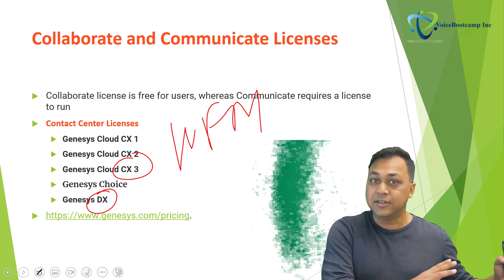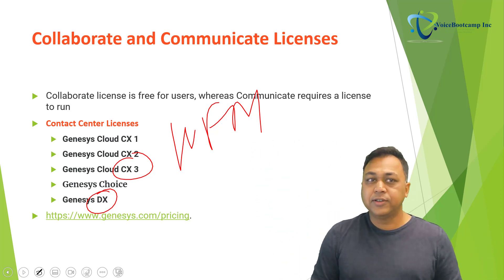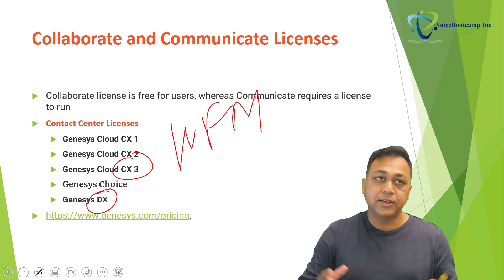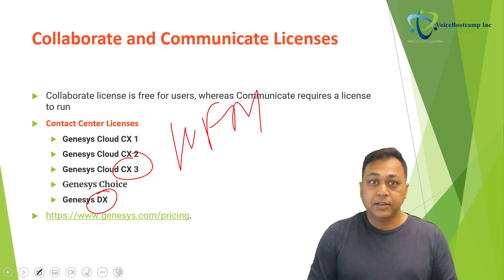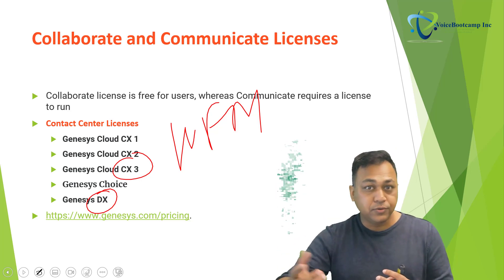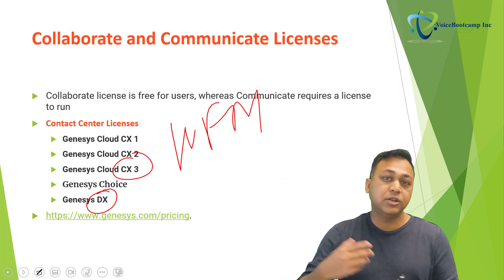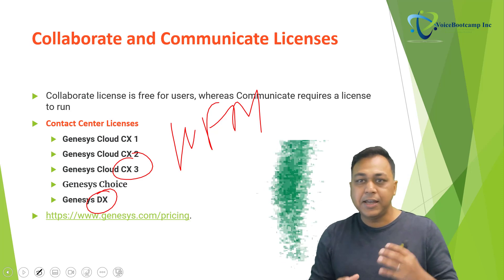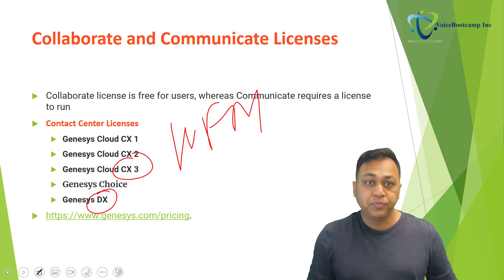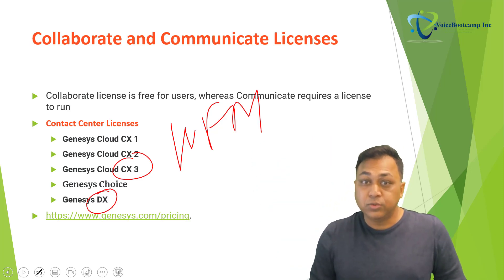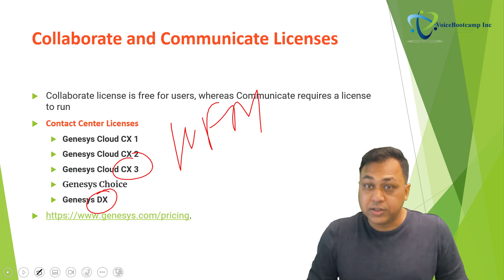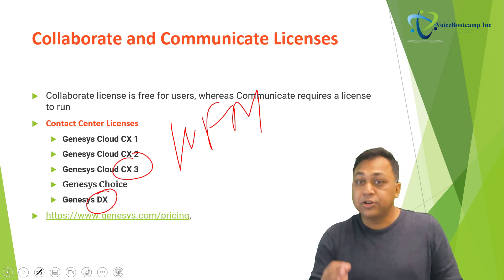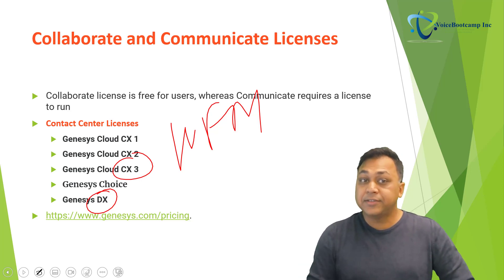When a customer comes onto your website or calls in, instead of wasting time, the system tries to understand what the customer wants based on what they type and gives them solutions. For example, if you are searching for a Windows product, the bot might say: 'Are you looking for price? Are you looking for invoicing? Are you looking for information?' — giving a bunch of pre-set messages. It's a more advanced AI-assisted messaging channel. Genesis DX does include collaborate and communicate, which are part of the communication component of Genesis. A simple organization can use Genesis Cloud CX collaborate and communicate features as a communication system.